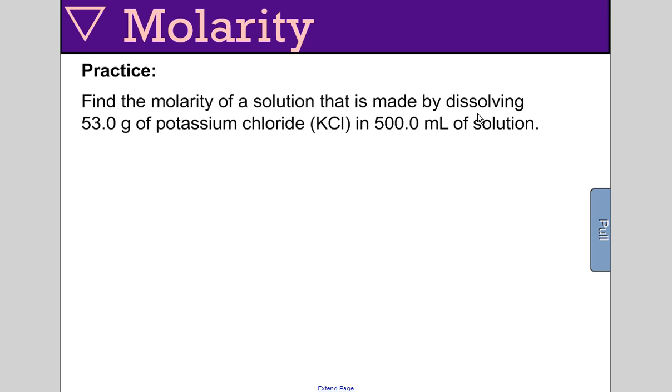Find the molarity of a solution that is made by dissolving 53.0 grams of potassium chloride in 500 mils of solution. We've got mass instead of moles, and 500 mils instead of liters. First, we need to convert this mass value to moles using molar mass from the periodic table. Potassium is about 39, chlorine is about 35.45 or 35, so that's roughly 74 for the molar mass. This value in liters should be 0.5 liters.